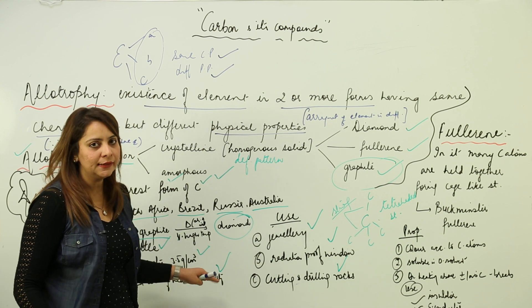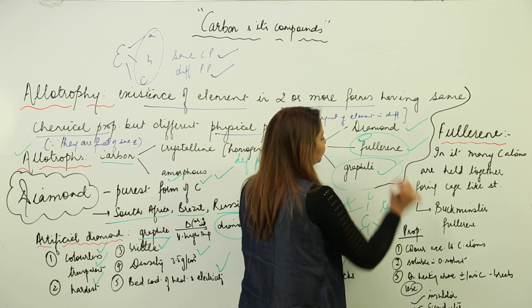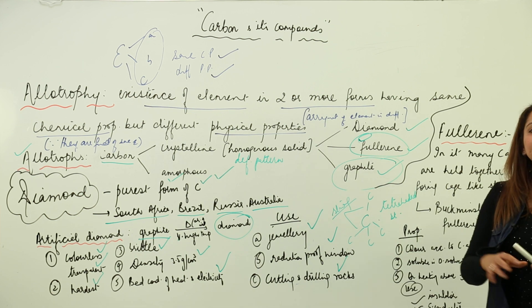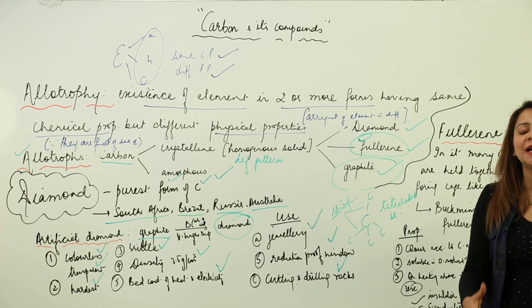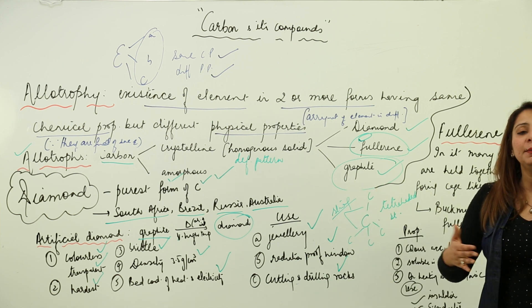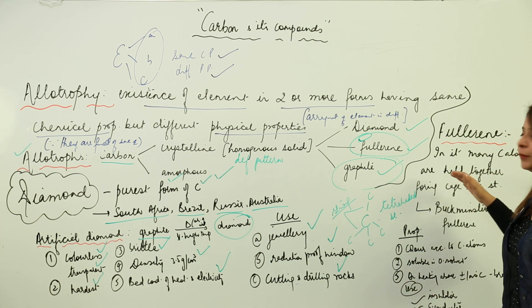Coming onto the third crystalline form, that is fullerene. In fullerene, many carbon atoms are arranged together forming a cage-like structure which resembles just like a football. The carbon atoms can range up to 200, 300 also.